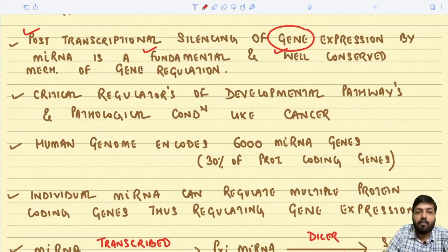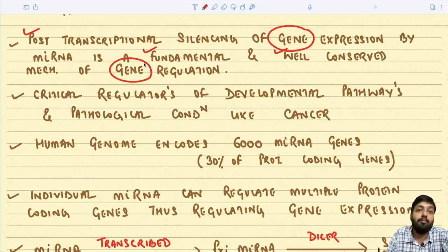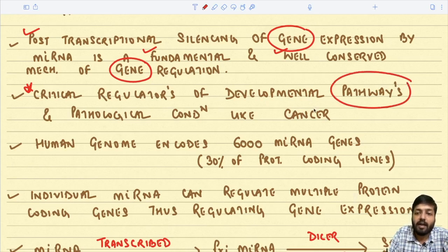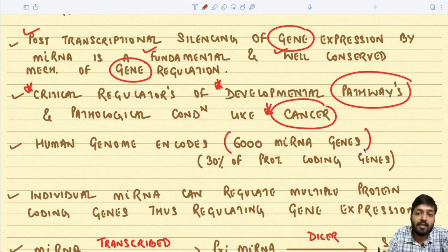Post-transcriptional silencing by micro RNA is a fundamental and well-conserved mechanism of gene regulation. Micro RNAs are critical regulators of developmental pathways and pathological conditions like cancer. After an mRNA has been formed, that mRNA can be targeted by micro RNA and silenced — that is why we use the term post-transcriptional silencing. The human genome encodes approximately 6,000 micro RNA genes, comprising 30 percent of the protein-coding genes.